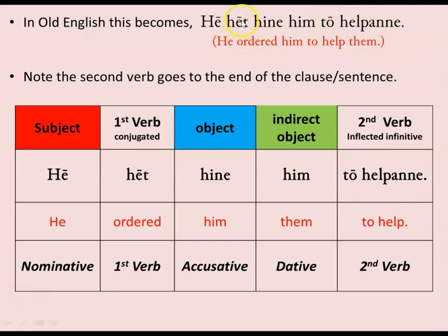The first verb is in the second position, conjugated, and then the second verb goes to the very end in its infinitive form — in this case the inflected infinitive form. If there were a third verb, it would go in the second-to-last position, and a fourth verb in the third-to-last position, both in the infinitive form. Old English, like modern English, is a verb-second language, hence 'hēt' coming after the subject.